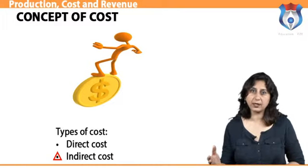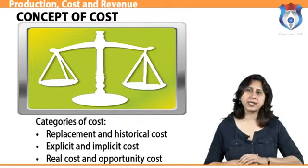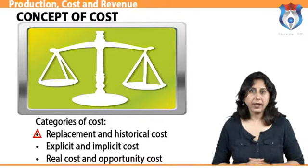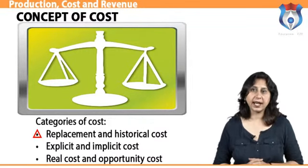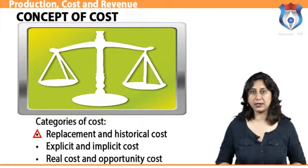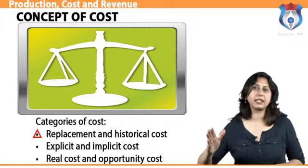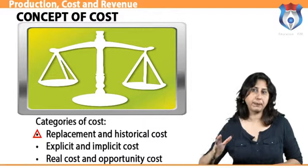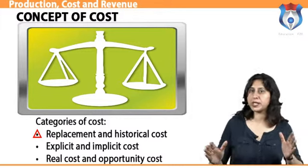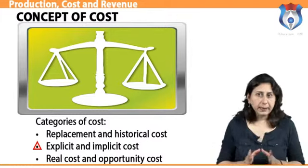Costs can be further distinguished into replacement and historical costs. The historical cost of an asset refers to the actual cost incurred at the time the asset was acquired. In contrast, the replacement cost stands for the cost which must be incurred if the asset is to be purchased today. The two concepts differ due to price variations over time.